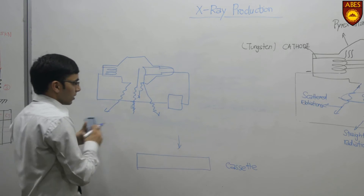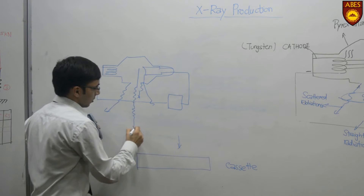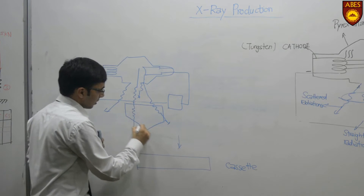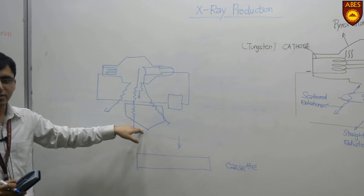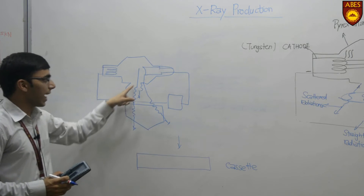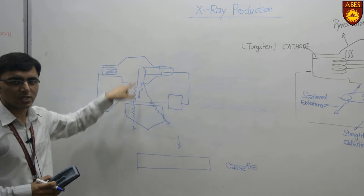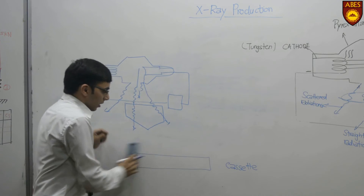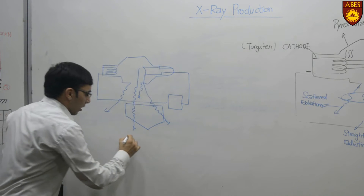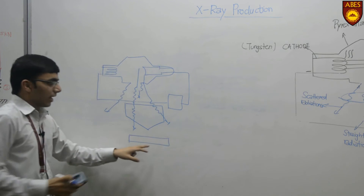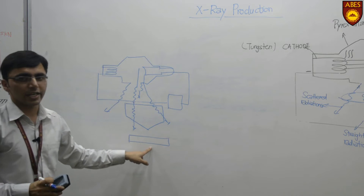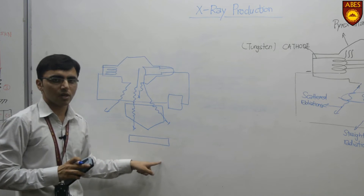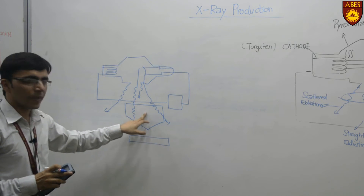There are two more equipment components. The first one is the collimator. The collimator restricts the X-ray path, meaning it reduces scattered radiations and allows only those radiations which are moving straight towards the patient, hence reducing unnecessary radiations. The other component is a filter, which also helps in stopping the unnecessary type A radiations and allows only the high energy radiations to reach the patient.